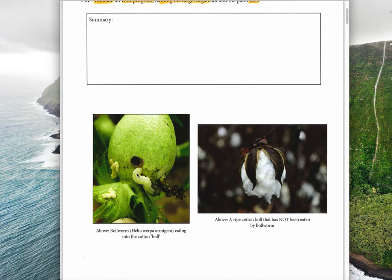The cotton bollworm is here, its scientific name is Helicoverpa armigera and basically it burrows inside the boll. This here is called a boll B-O-L-L of the cotton plant and inside this boll is where the cotton grows. This is an example of a ripe cotton boll that hasn't been eaten.